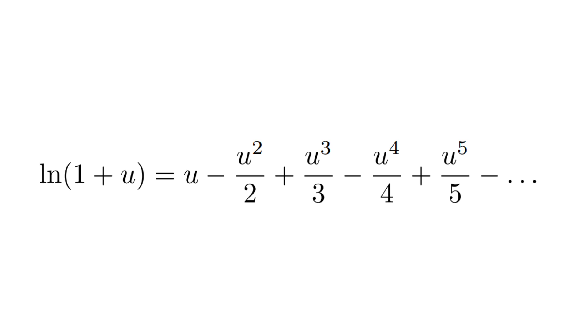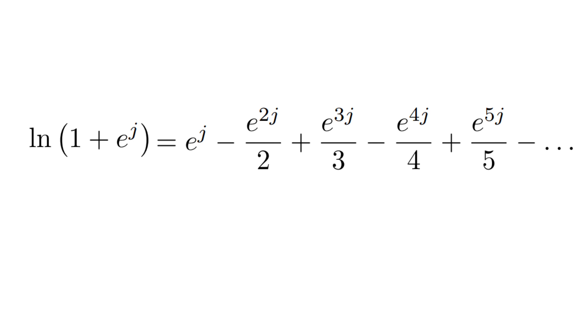Now, to make things more interesting, we will replace u with e raised to the power of j, where j is our special virtual unit. The beauty of j lies in its unique properties, which we will explore. When we substitute e raised to the power of j into the series, we get e raised to the power of j minus e raised to the power of 2j divided by 2, plus e raised to the power of 3j divided by 3, minus e raised to the power of 4j divided by 4, and so on. This looks just like the original series, but with e raised to the power of j in place of u.